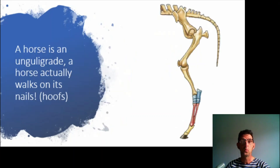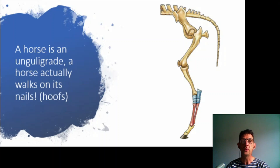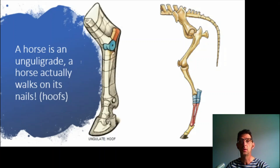When we look at a horse, a horse is an ungulate or an unguligrade. It actually walks on its nails — on its hoofs. So hoofed animals, like a horse, are ungulates or unguligrades.